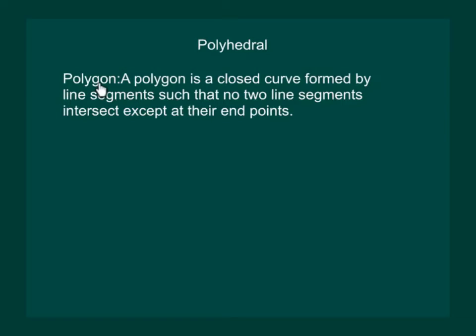A polygon is a closed curve formed by line segments such that no two line segments intersect except at their endpoints. That means a square, a rectangle, any quadrilateral, or pentagon,